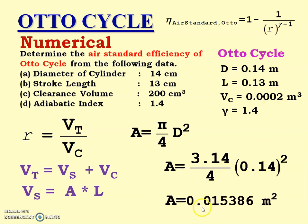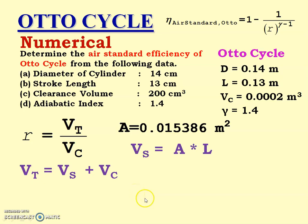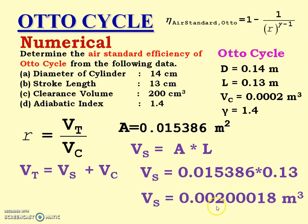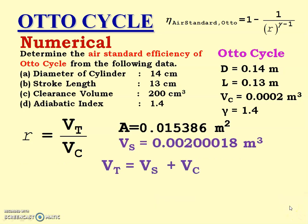The answer is area = 0.015386 m². Now putting this value of area into Vs: Vs = area × stroke length. Area is 0.015386 m² and stroke length is 0.13 m, so the answer is Vs = 0.0020018 m³.